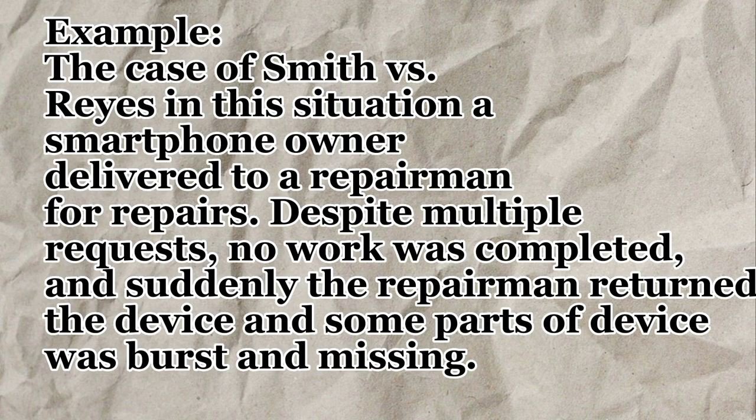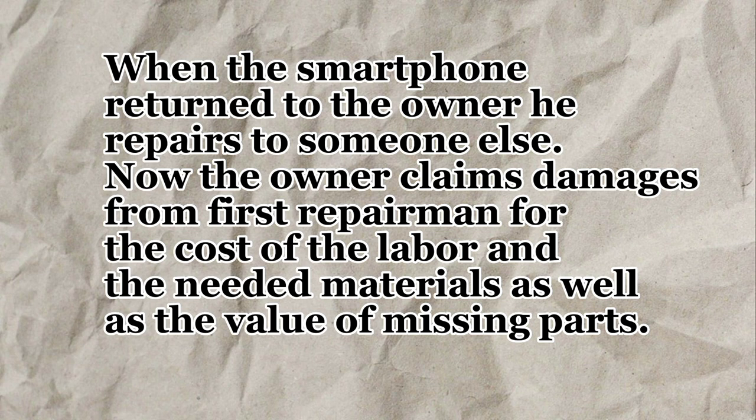Let's take for example the case of Smith v. Rias. In this situation, a smartphone owner delivered a device to a repairman for repairs. Despite multiple requests, no work was completed. And suddenly, the repairman returned the device with some parts burst and missing. When the smartphone was returned to the owner, he had it repaired by someone else. The owner then claimed damages from the first repairman for the cost of the repairs and the cost of the missing parts.